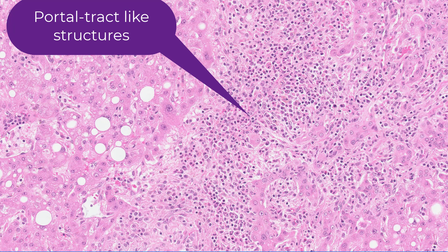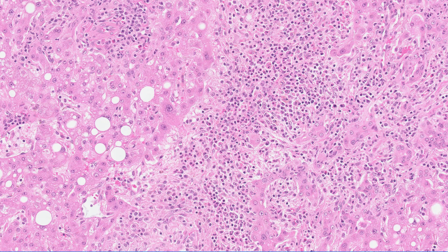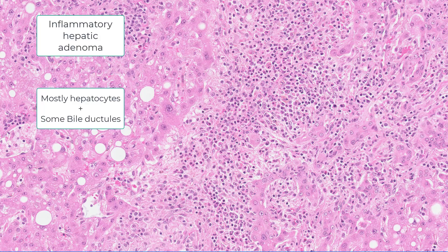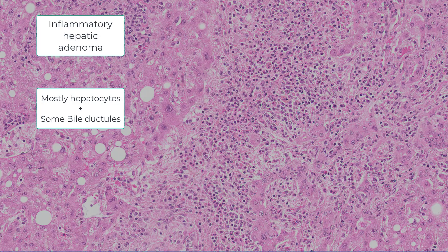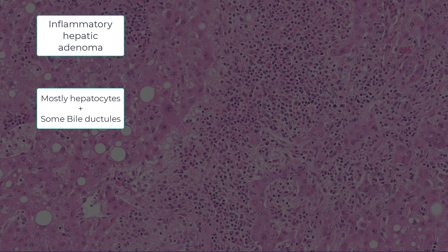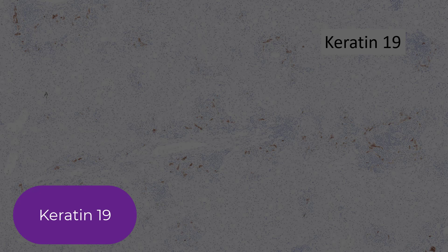This is one exception to the rule that hepatic adenomas are a pure population of hepatocytes. The exception is that inflammatory type adenomas, in addition to hepatocytes, also often show these bile ductules. And if you don't believe me, these are indeed bile ductules, as you can see from this keratin-19 stain.